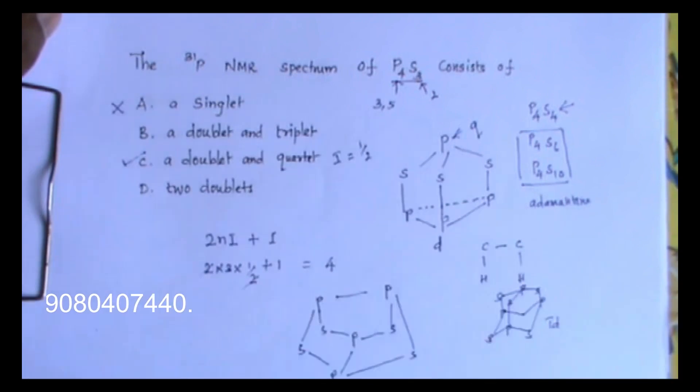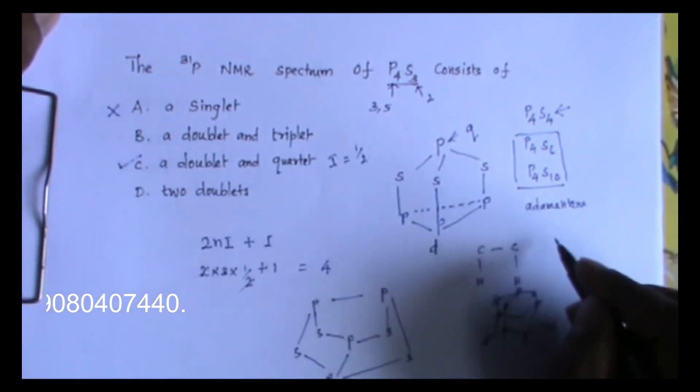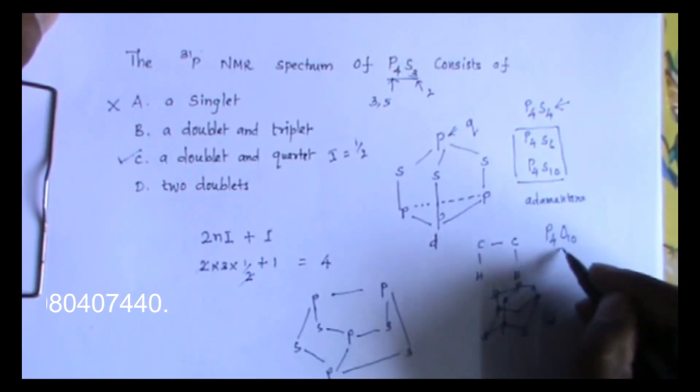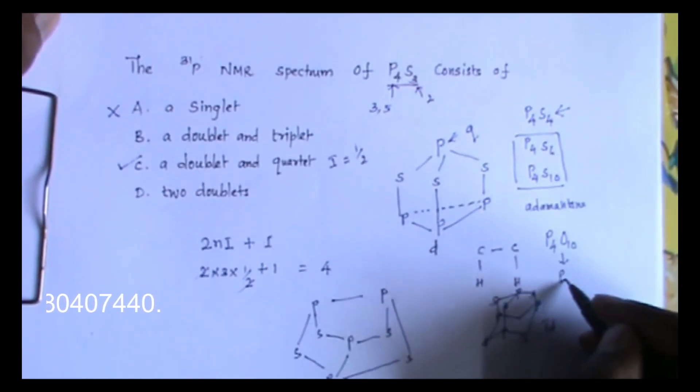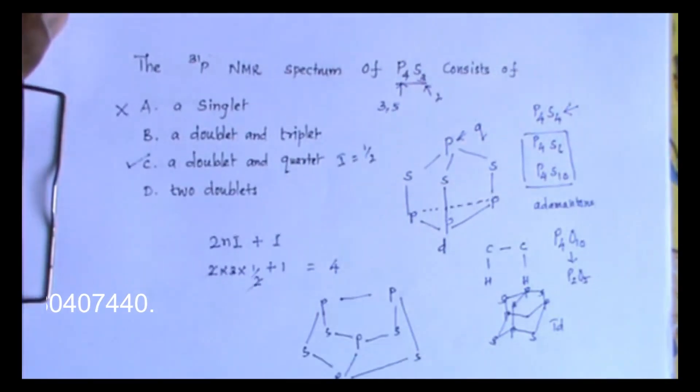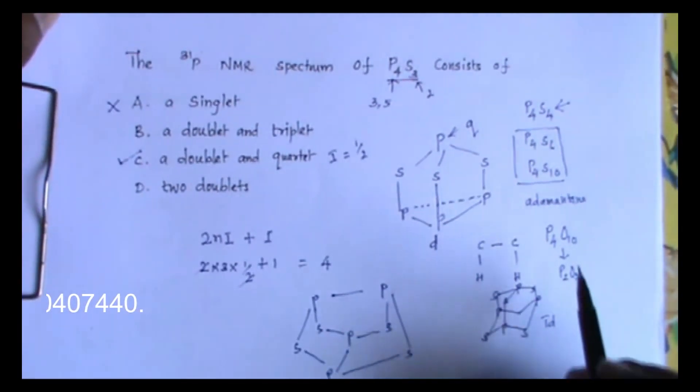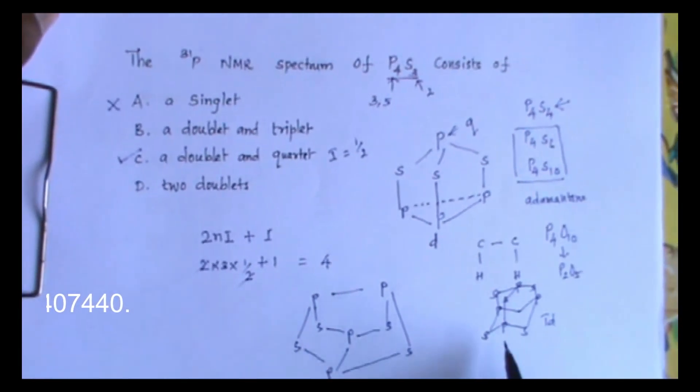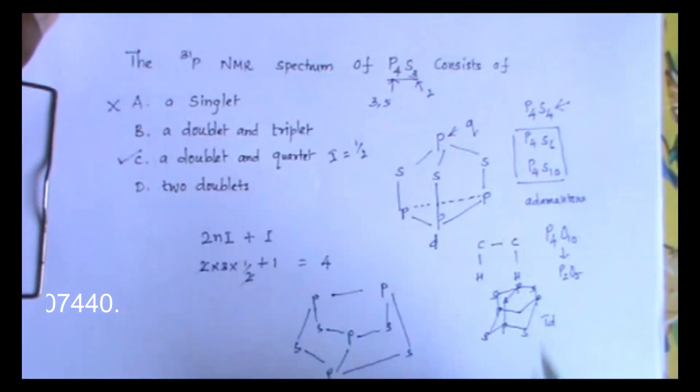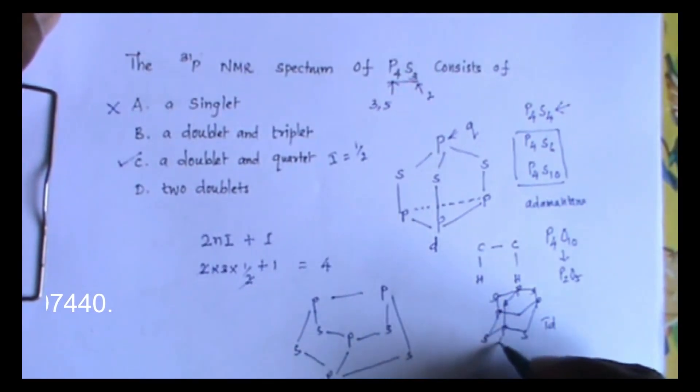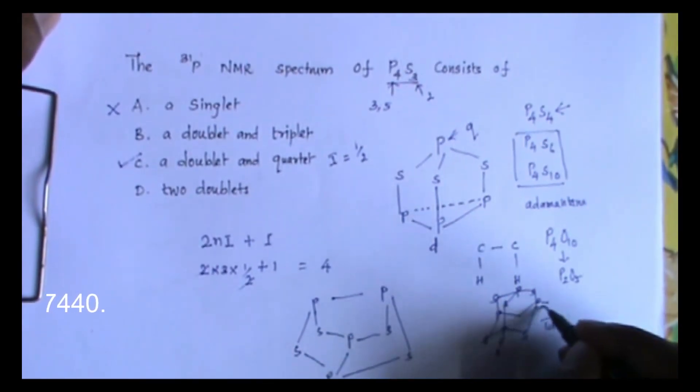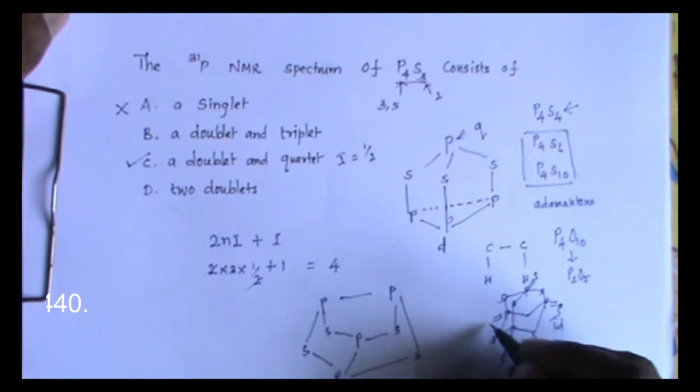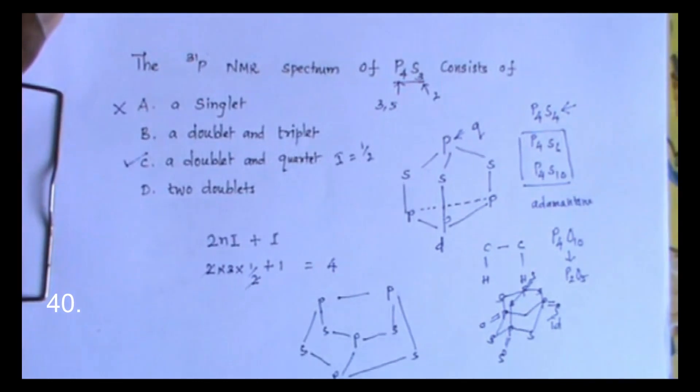What about P4S10? P4S10 has similar structure to P4O10. Often this is referred as P2O5. Even though we write as P2O5, the exact formula is P4O10 and the structure will be similar to adamantane. Let us go for P4S10. Here, you have to introduce sulfur atom. So the valence of phosphorus will be 5.